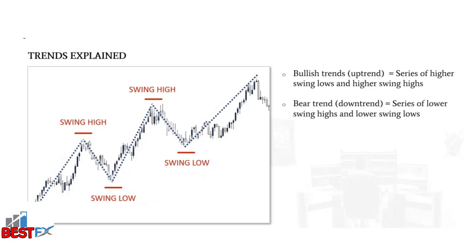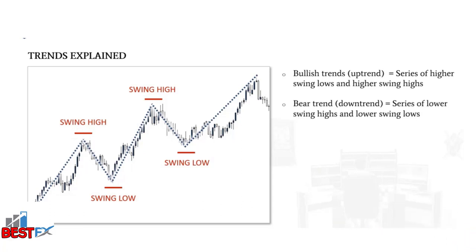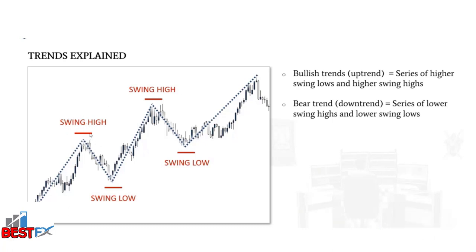Every time price turns, swing points are formed. When price reverses and pulls back, it forms a swing high. Once the pullback is over and the next bullish move starts, a swing low is formed. When the next pullback begins, another swing point forms, and since this one is higher than the previous swing point, it's called a higher high. Once this pullback ends, a new swing low forms, and since it is higher than the previous swing low, it is called a higher low.